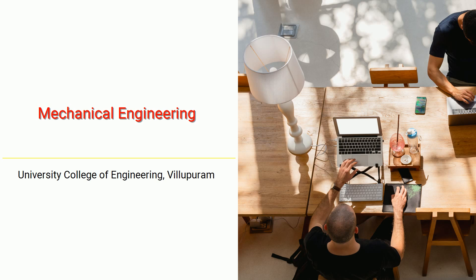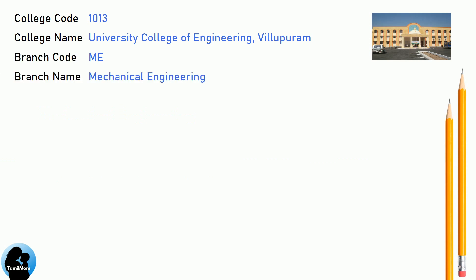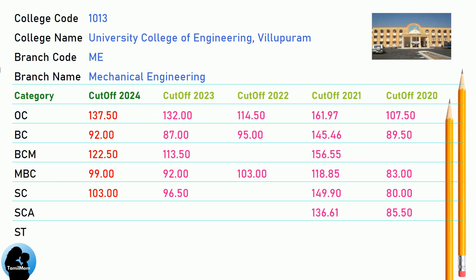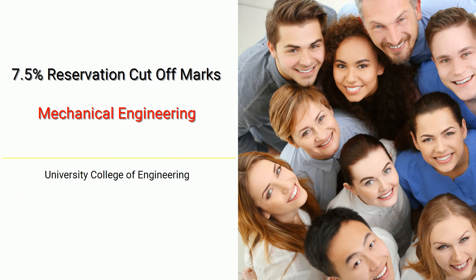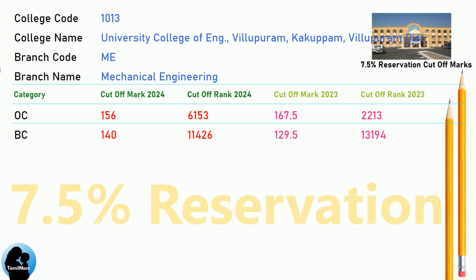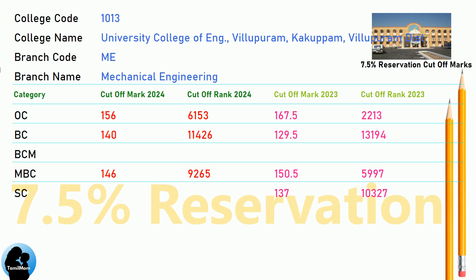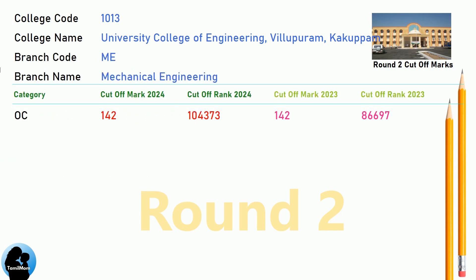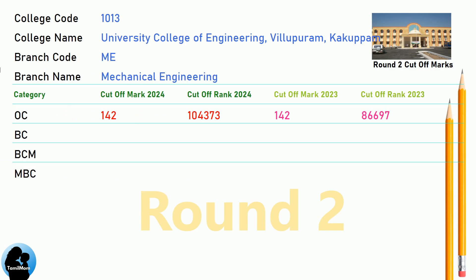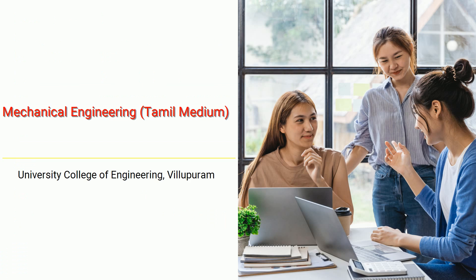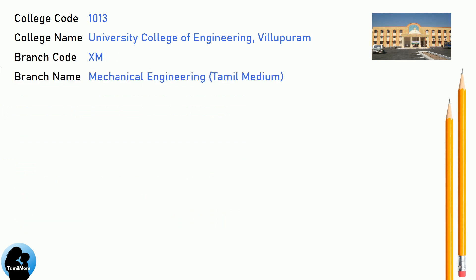DNA Cut-off for University College of Engineering, Villapuram in Mechanical Engineering. DNA 7.5 Reservation Cut-off for University College of Engineering, Villapuram in Mechanical Engineering. DNA Round 2 Cut-off for University College of Engineering, Villapuram in Mechanical Engineering. DNA Cut-off for University College of Engineering, Villapuram in Mechanical Engineering, Tamil Medium.